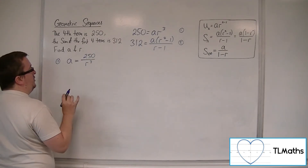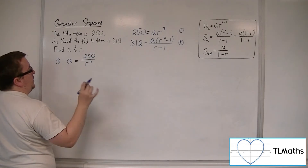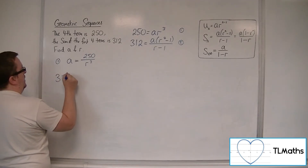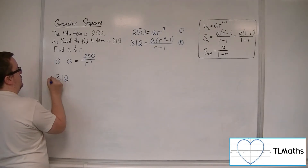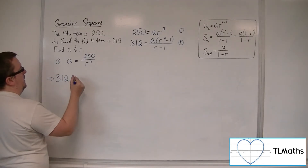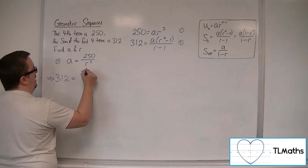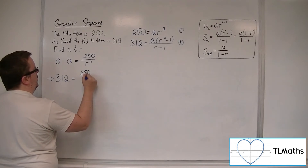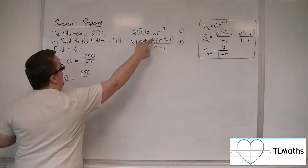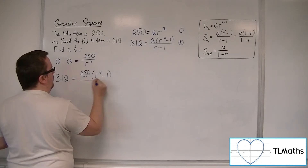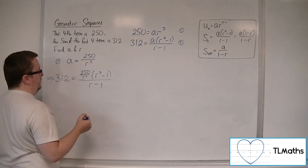Now if I substitute that into equation 2, I will get 312 equal to 250 over R cubed — that's the A — times (R to the 4 minus 1), all over (R minus 1).